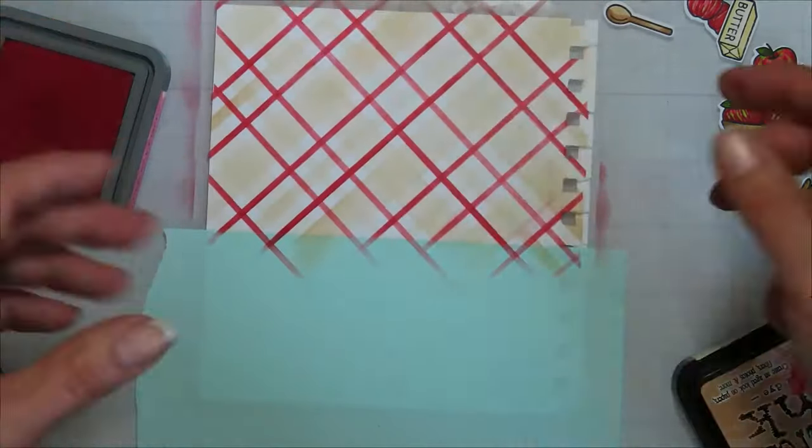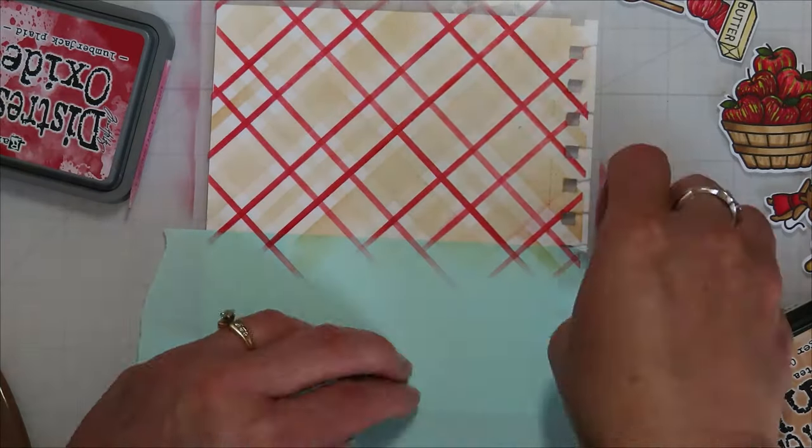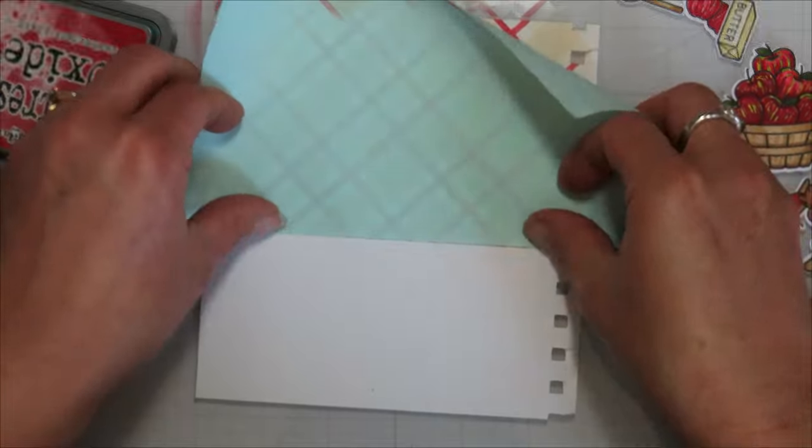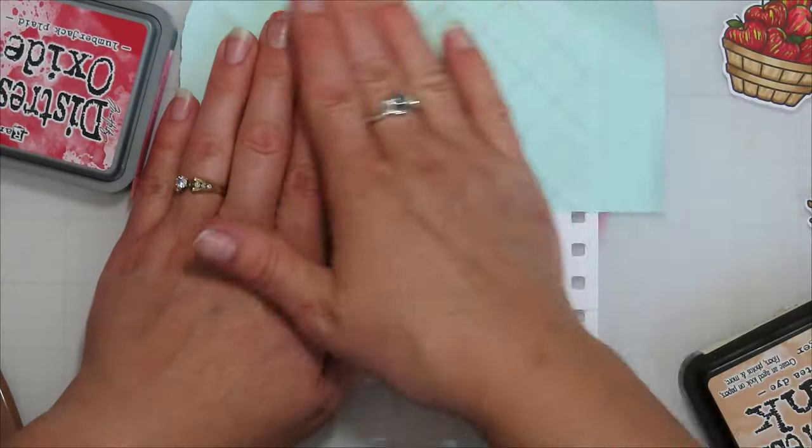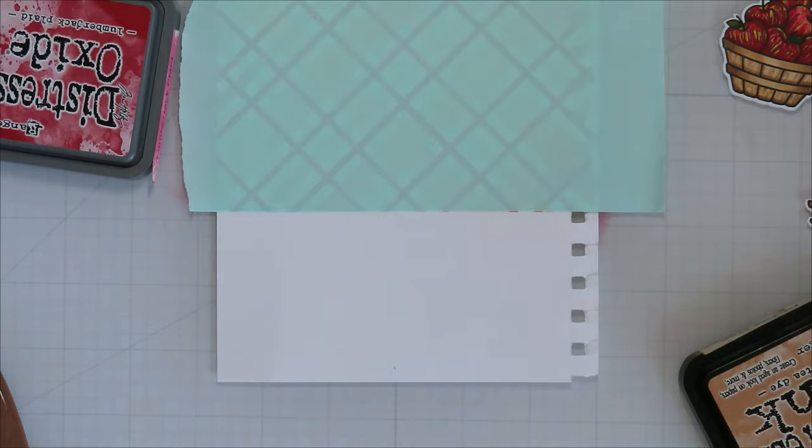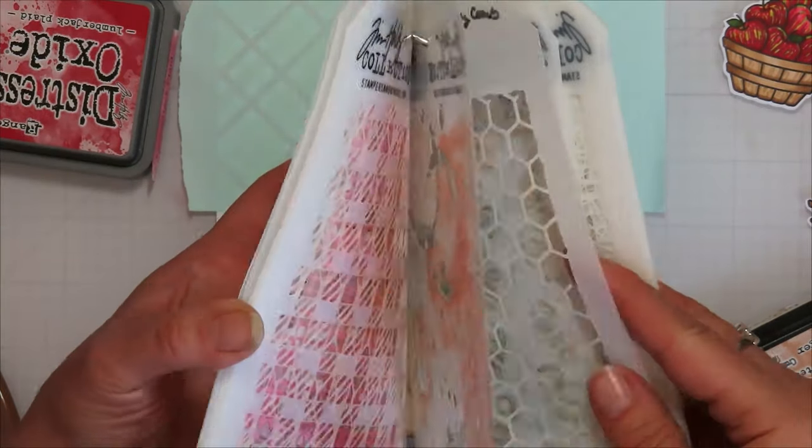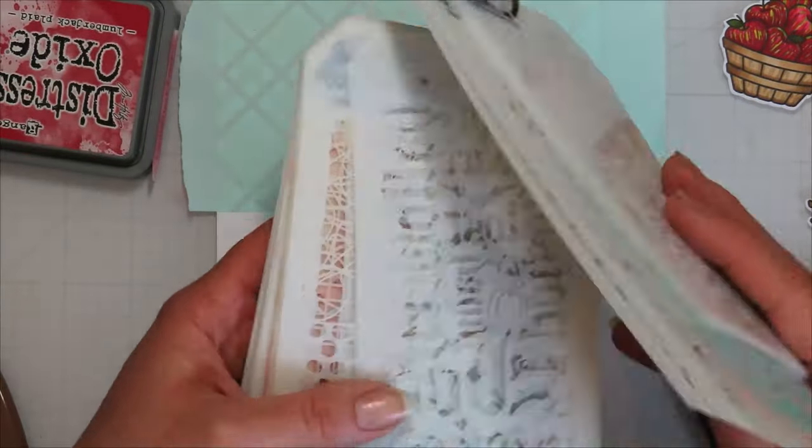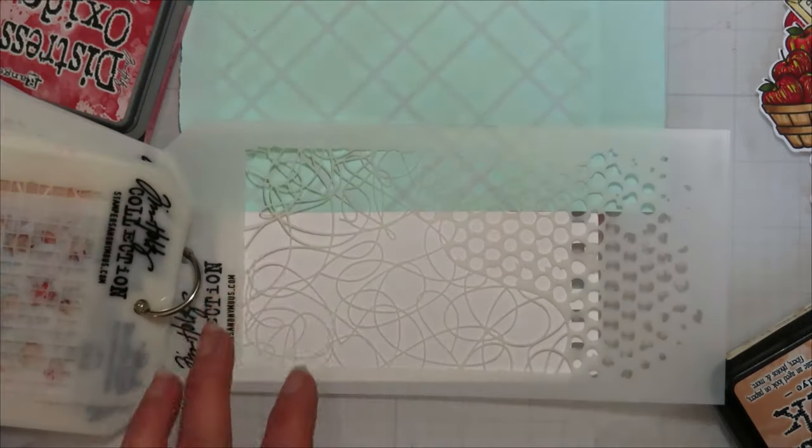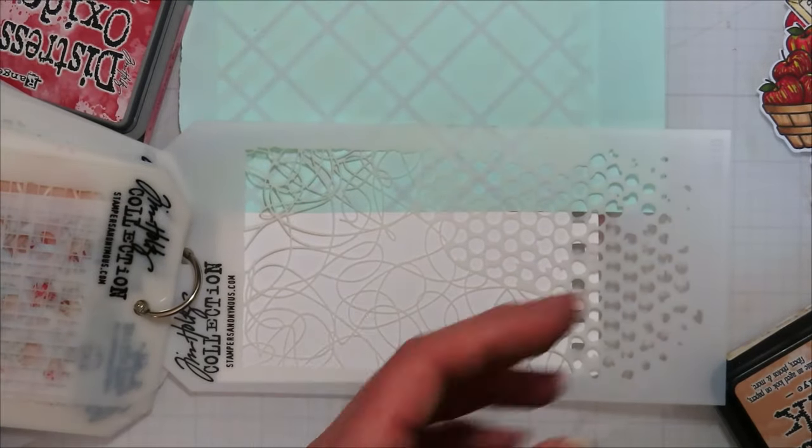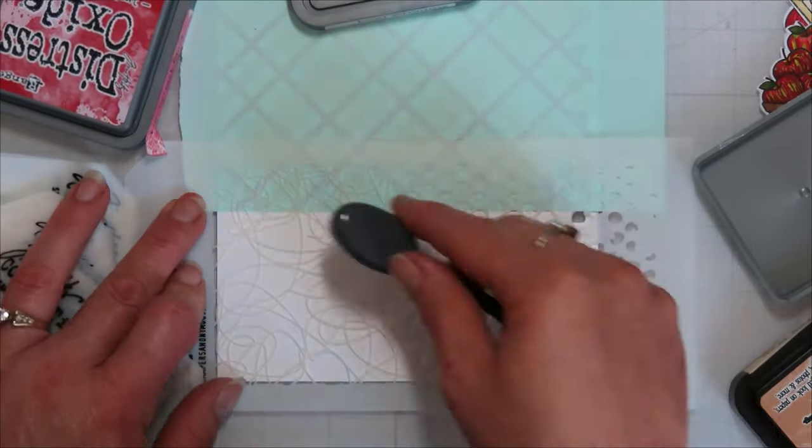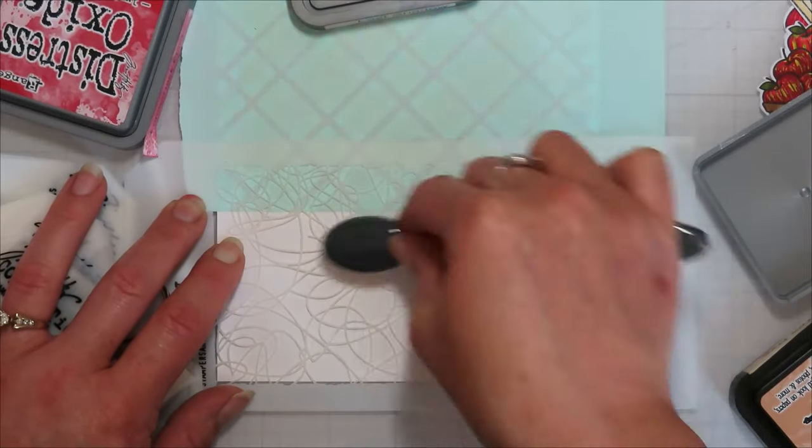I am ink blending on some marker paper there, and then I'm going to reuse my mask for the bottom part. So I want to have like a marble countertop. I really wanted a wood countertop, butcher block, but I don't have a wood stencil. So I ended up using this swirly one from Tim Holtz. It's one of those that come in the combo kit from Joann.